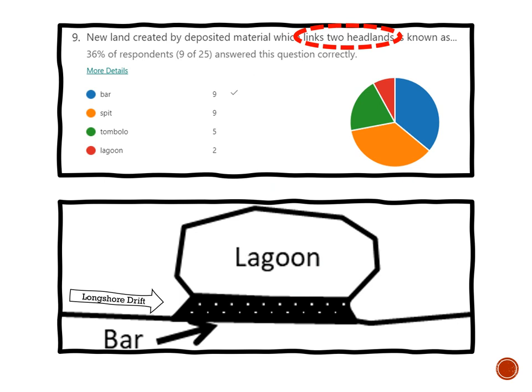So a bit of feedback on the Do Now quiz, because it's predominantly been diagram work for the last few weeks, other than the exam question which I've already fed back on. We're looking at this question: new land created by deposited material which links to headlands is known as — the answer is a bar. But what we need to be really careful of is lots of people putting spit, lots of people putting tombolo, lots of people putting lagoon. The problem is we are not reading the question closely enough.